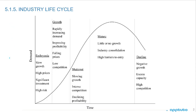Here we have the industry lifecycle. On the y-axis we have demand, and on the x-axis it's time. As time goes on, we start in the embryonic stage where there's very low demand. It's going to grow to mature where demand peaks, and then it's going to decline. That's the industry lifecycle.